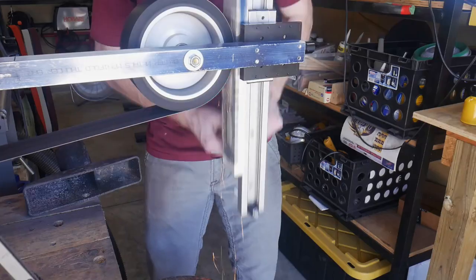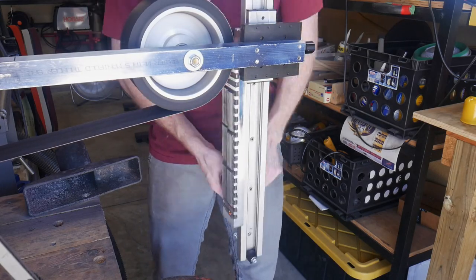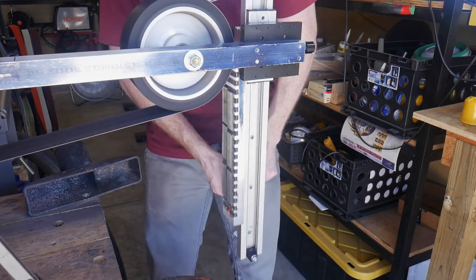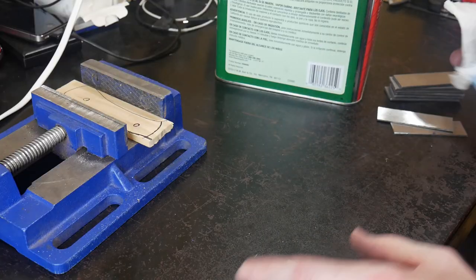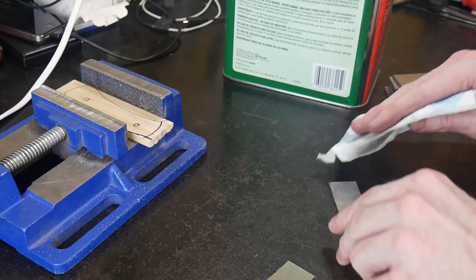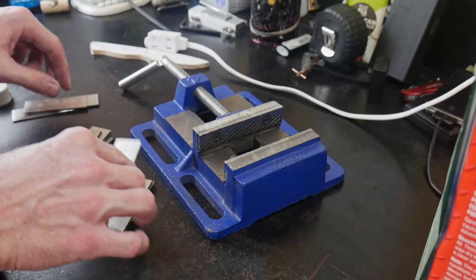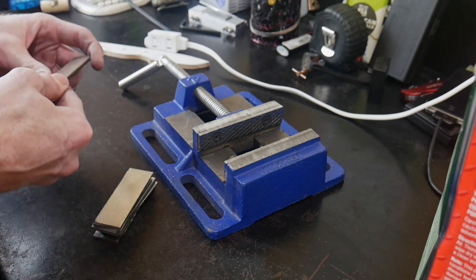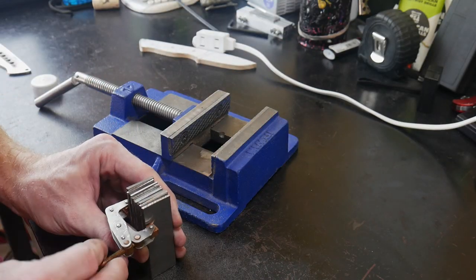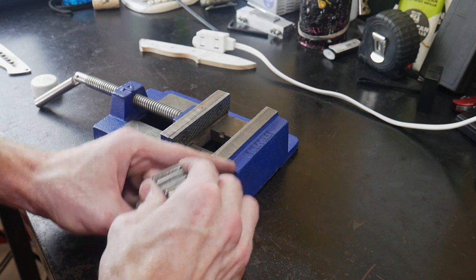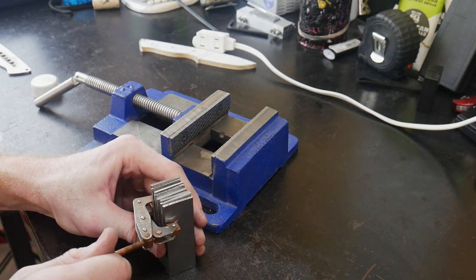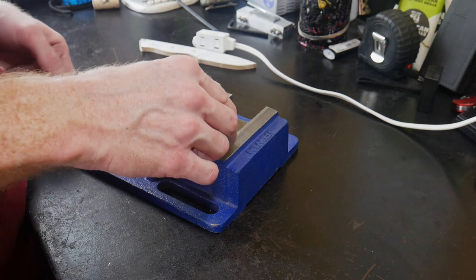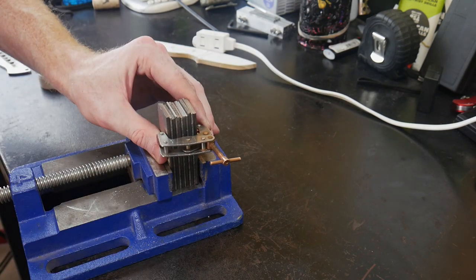I've had these pieces of 15N20 and 1080 lying around for years, all the way back to when I was 16 and just started making knives. Since I don't have a hydraulic press, I'll be making this Damascus billet by hand. I'm going to be making a small billet of only 11 layers, around two and a half inches long.